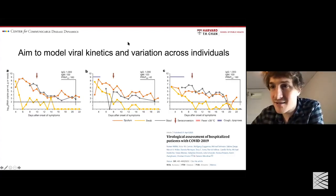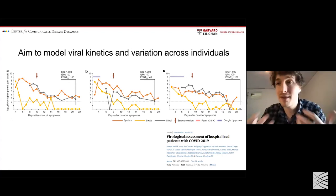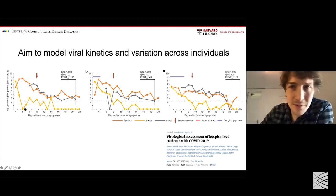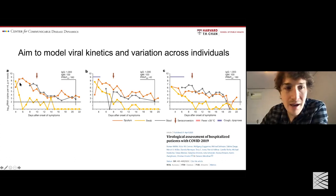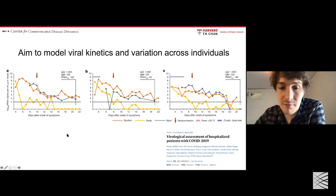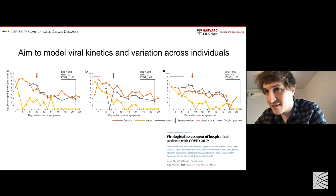Our aim is to model viral kinetics — this up-and-down shape — and how much kinetics vary across individuals, since we're interested in simulating populations of viral loads. This is data from hospitalized patients from Munich, Germany. The key features are: there are consistent patterns, with a monotonic decline in viral load from time of first sample, starting highest around symptom onset. But there's also substantial variation in the rate of decline across individuals, and substantial variation based on what sample type was taken.